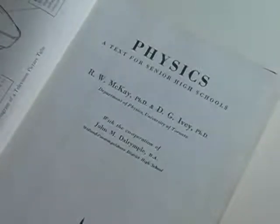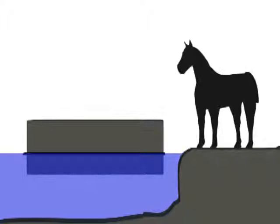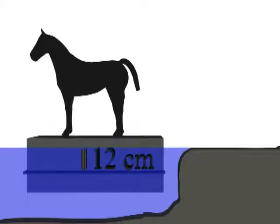When first studying physics many years ago, our instructor posed this question. A rectangular barge, 300 centimeters long and 200 centimeters wide, floats at the edge of a freshwater lake. A horse jumps into the barge, and the barge sinks 12 centimeters. How much does the horse weigh?